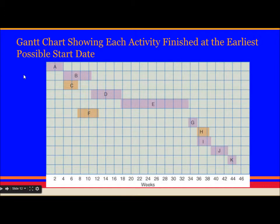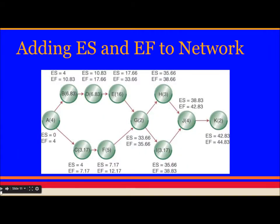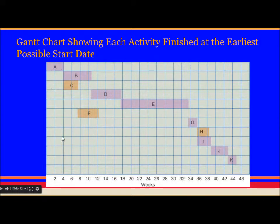This is the Gantt chart. Gantt chart shows each activity finished at the earliest possible start date. This Gantt chart we have drawn using the earliest possible start date using this activity on node diagram. This is just a bar chart. You can plot it on a piece of paper. And here you will see that the finish date is 44.83.